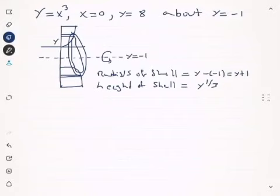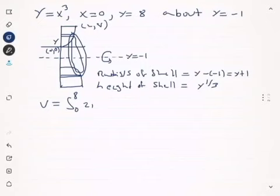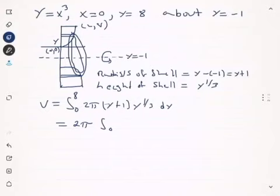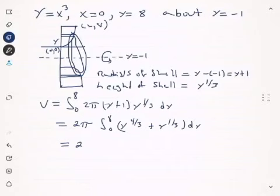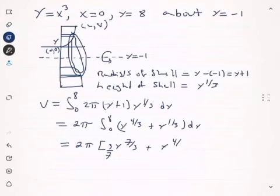The volume integral goes from zero to eight — the y values from (0,0) to (2,8). The integral is 2π times the shell radius (y plus one) times the shell height (y to the one-third), with respect to y. Multiplying out gives y to the four-thirds plus y to the one-third. Integrating yields 2π times [y to the seven-thirds times three over seven, plus y to the four-thirds times three over four].